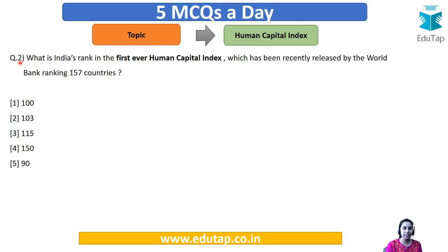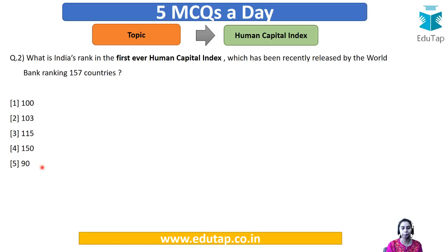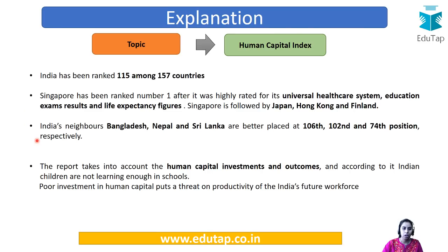Question number two: what is India's rank in the first ever Human Capital Index released by World Bank, ranking 157 countries? The options are 100, 103, 115, 150, or 90. The answer is 115 — India's rank is 115 out of 157 ranked countries. The index has been topped by Singapore, which has very effective policies related to education and healthcare.